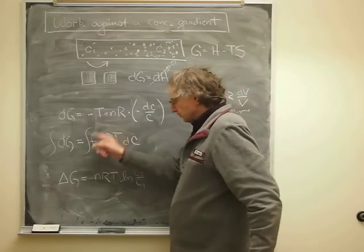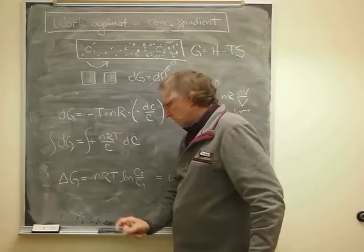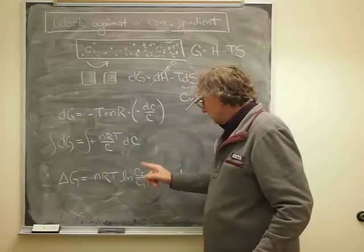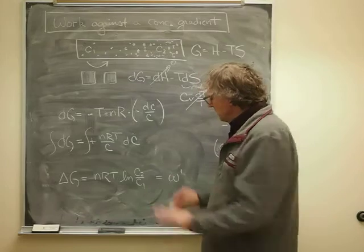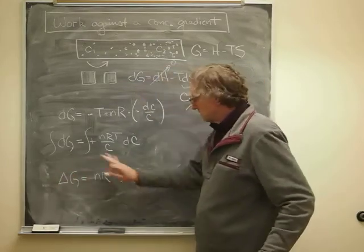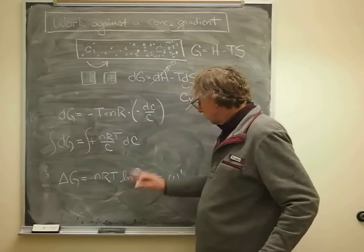And the 1 over C dC integrates out to a log, so we end up with nRT log C2 over C1. So that's quite important there. The change in Gibbs energy just depends on nRT times the log of the ratio of the concentrations.